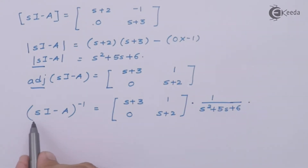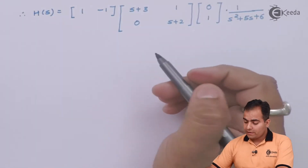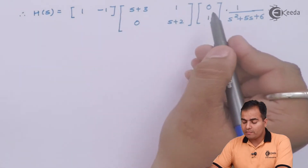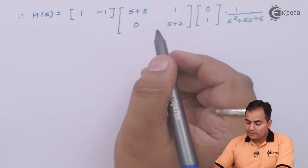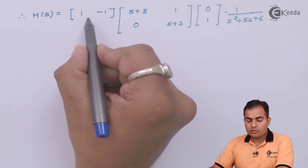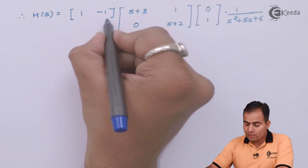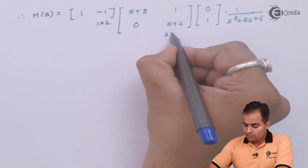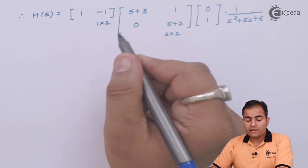Now substituting the (sI minus A) inverse value into equation number 1 to get H(s). The C value, (sI minus A) inverse, and B value are all substituted in. These are all matrices, so we multiply the two matrices first. The C matrix has 1 row and 2 columns (1×2), and the adjoint matrix is 2×2.